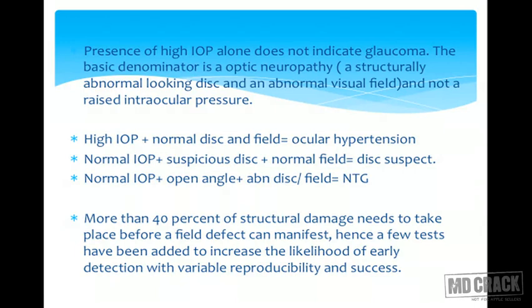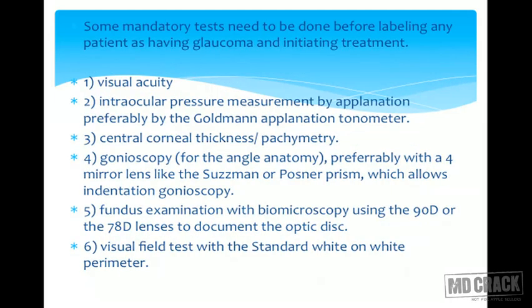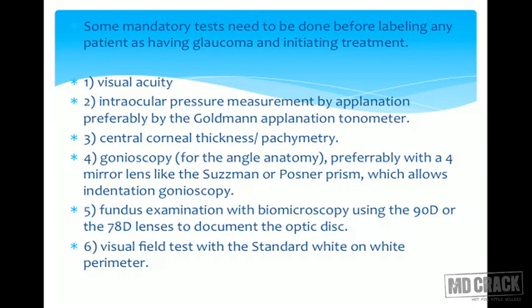More than 40% of structural damage needs to occur before a detectable visual field change appears on white-on-white perimetry. Tests like optical coherence tomography and the GDX nerve fiber analyzer can detect structural changes before functional changes develop on perimetry, although their value in clinical practice is still under validation. Mandatory tests before labeling a patient as having glaucoma are: visual acuity; intraocular pressure — measured by applanation using the Goldmann applanation tonometer, the gold standard; central corneal thickness, which provides an independent risk factor for glaucoma development; gonioscopy, fundamental to classification; fundus examination to assess the optic nerve; and a visual field test indicating functional damage.